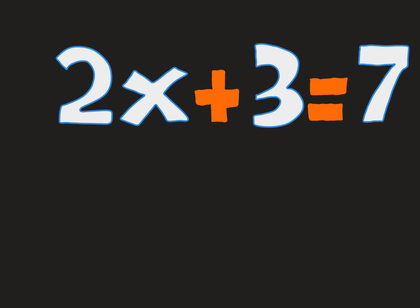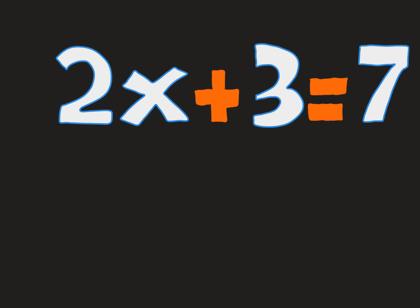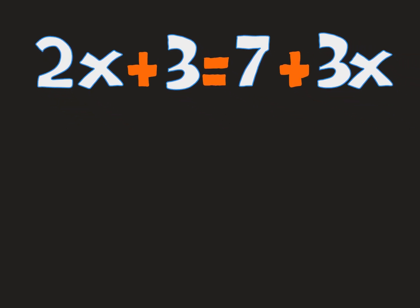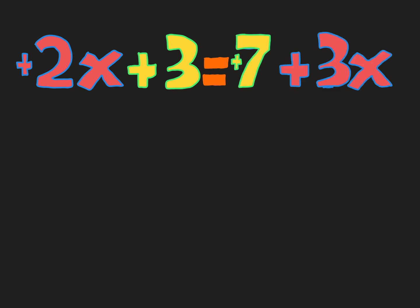All right, what if we start with the last problem and make it a little more complicated? So this might seem like a more difficult problem, but let's first label our terms to make sure we're talking about the right things. Positive 2x is an x term, plus 3 is a constant term, plus 7 or positive 7 is a constant term, and plus 3x is an x term.